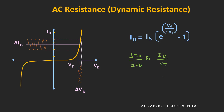Taking the inverse of dId/dVd gives the AC resistance. So the AC resistance equals the thermal voltage Vt divided by the diode current Id. Here, the diode current Id is the DC current flowing through the diode. For a given diode, if we know the Q-point, we can simply find the value of the AC resistance. This is another way to find the AC resistance.